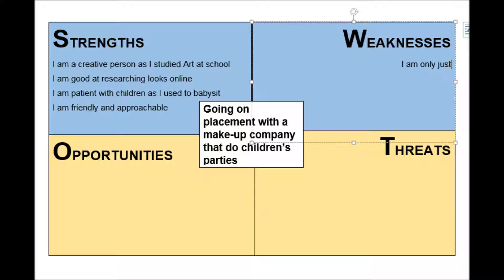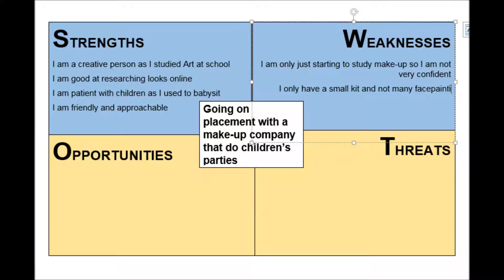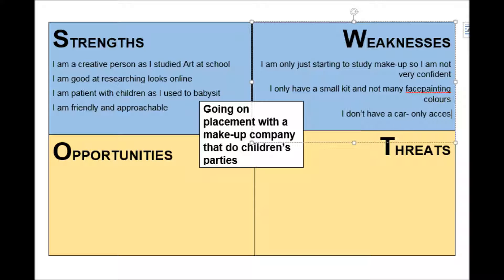Focusing over here on the right on weaknesses, we're thinking about where this person isn't so strong. They've said they're just starting out with makeup and aren't really very confident, which is going to be a little difficult on placement. They've also only got a small kit — not very many colors or face paints — so that's not going to offer much choice for children. Their last weakness is that they don't have their own car, so they have to get around the county by bus, which could make getting to parties difficult.